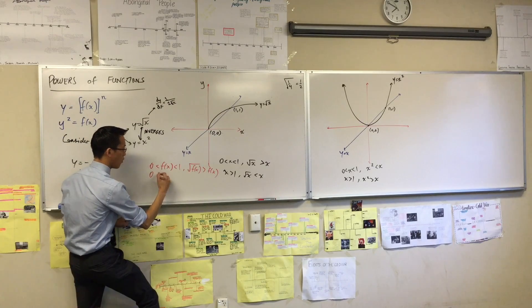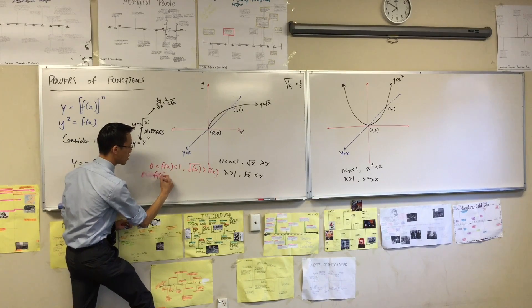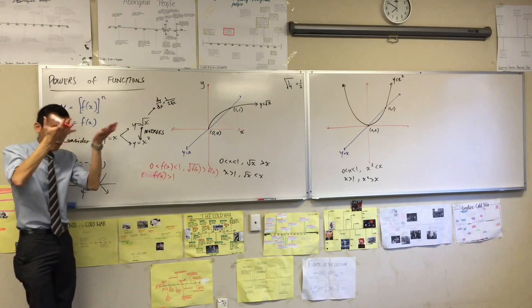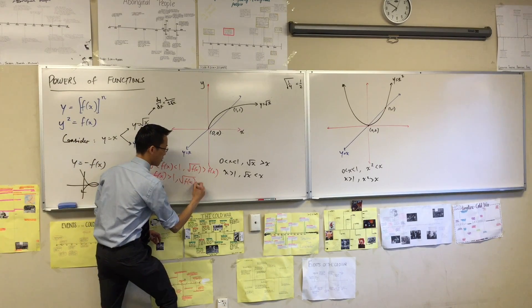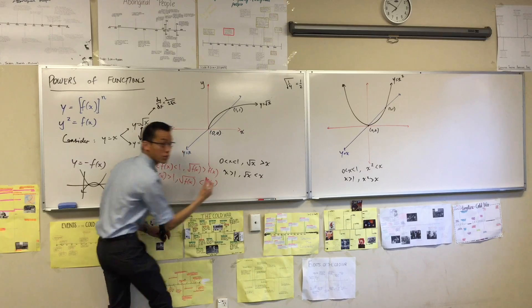And in the same way, when a function—wrong way, wrong domain—when the function values are above 1, you take the square root and you'll be less than the original function.